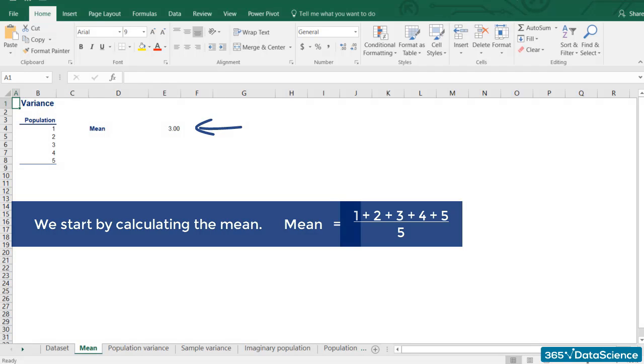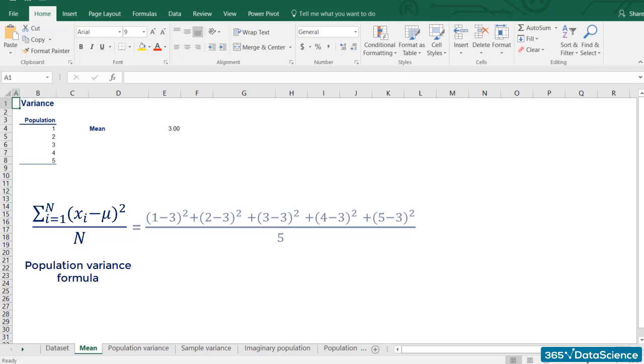Then we apply the formula we just saw: (1 minus 3) squared plus (2 minus 3) squared plus (3 minus 3) squared plus (4 minus 3) squared plus (5 minus 3) squared. All of these components have to be divided by 5. When we do the math, we get 2. So, the population variance of the dataset is 2.